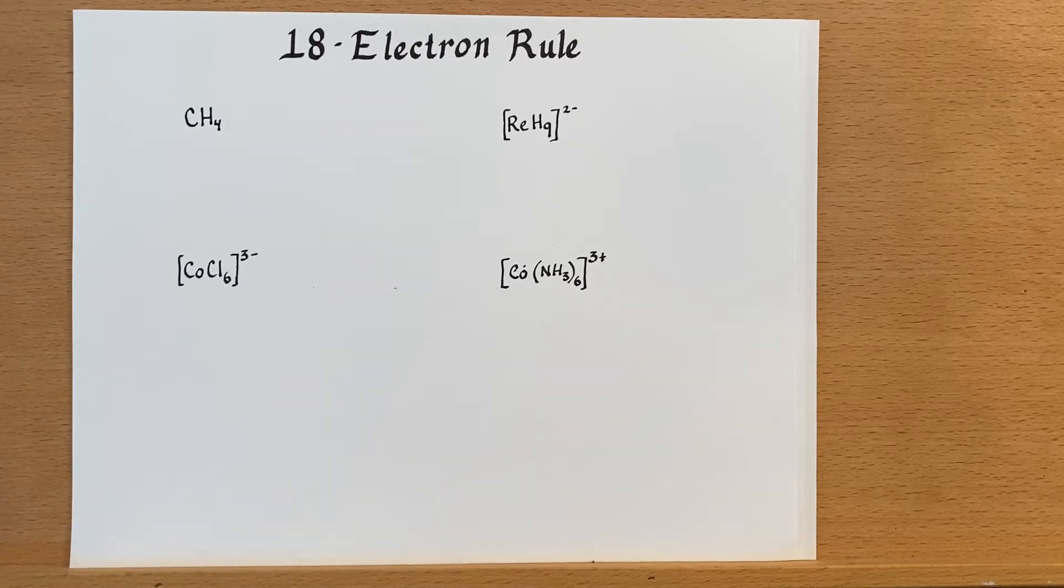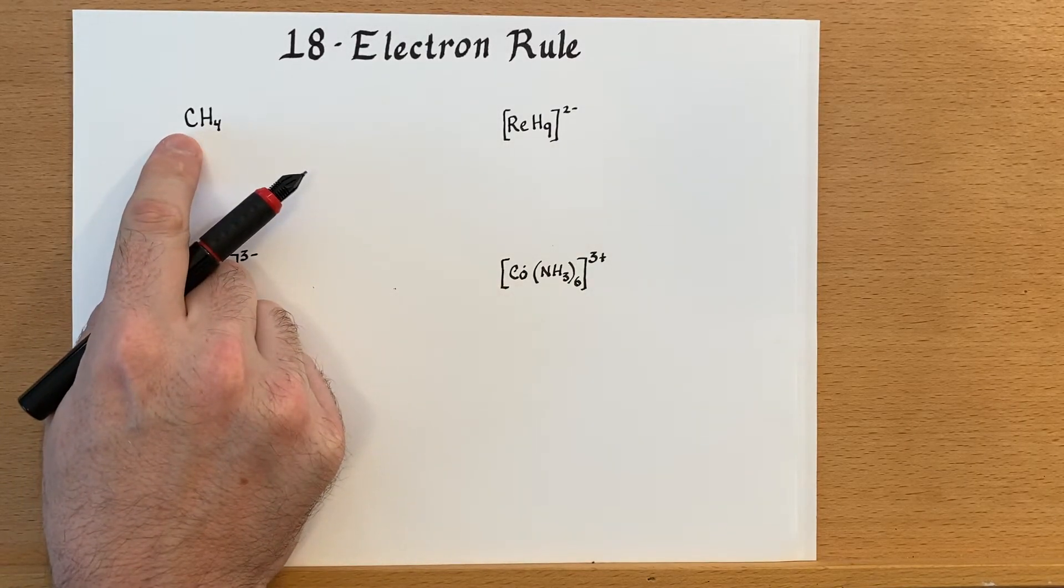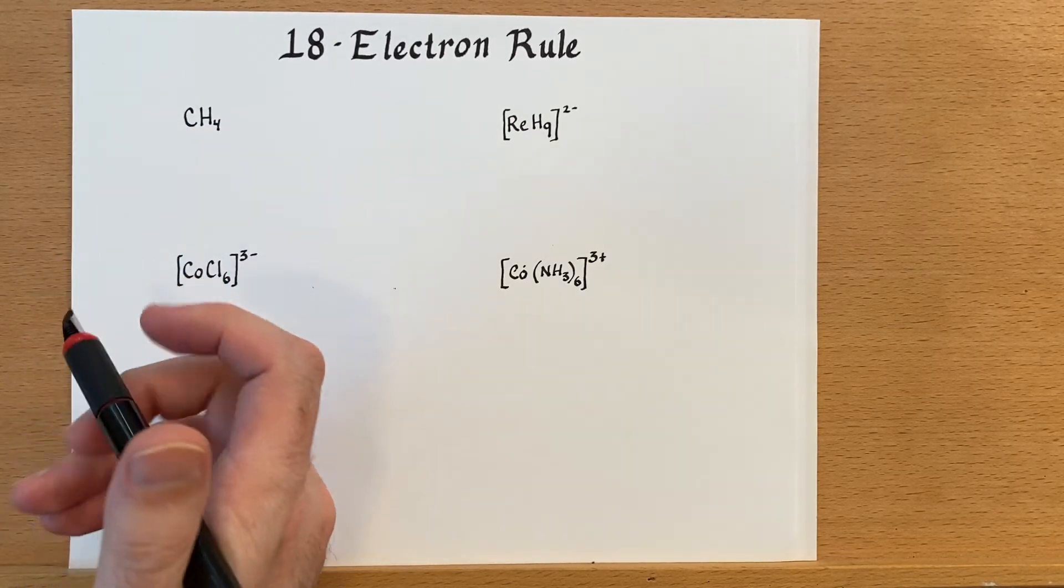So let's just go over some examples. I've written one here that would follow the octet rule just as a reminder of how that is working, and we can use this as an illustration for how we're going to count electrons.